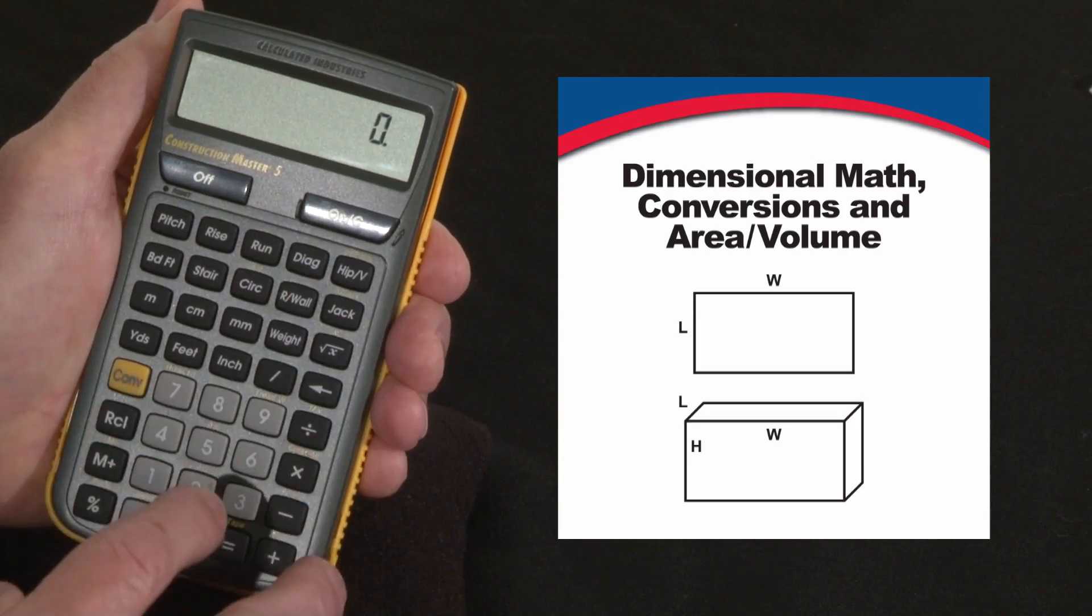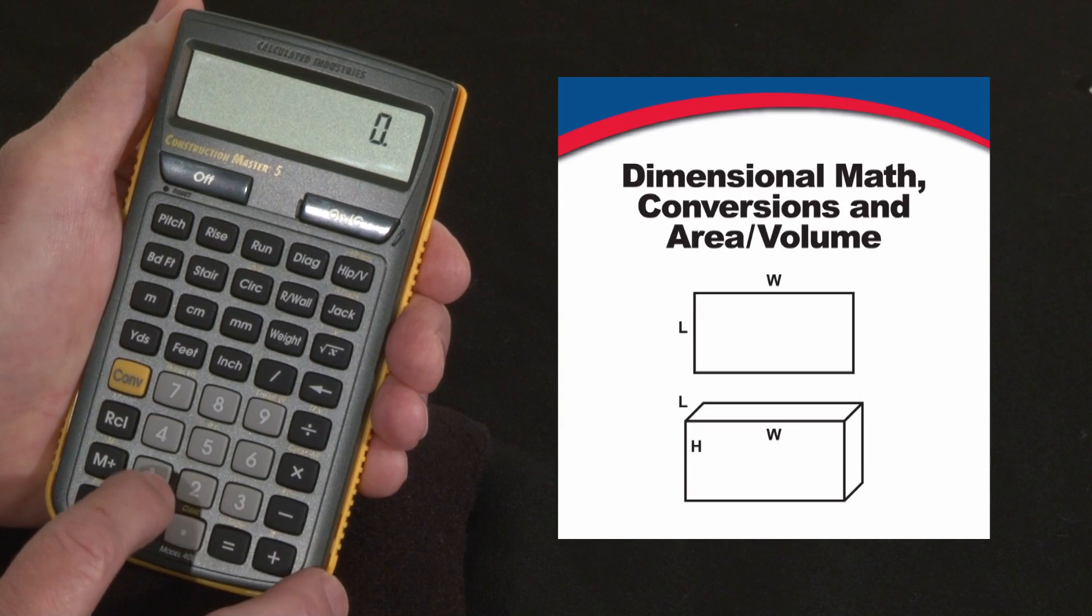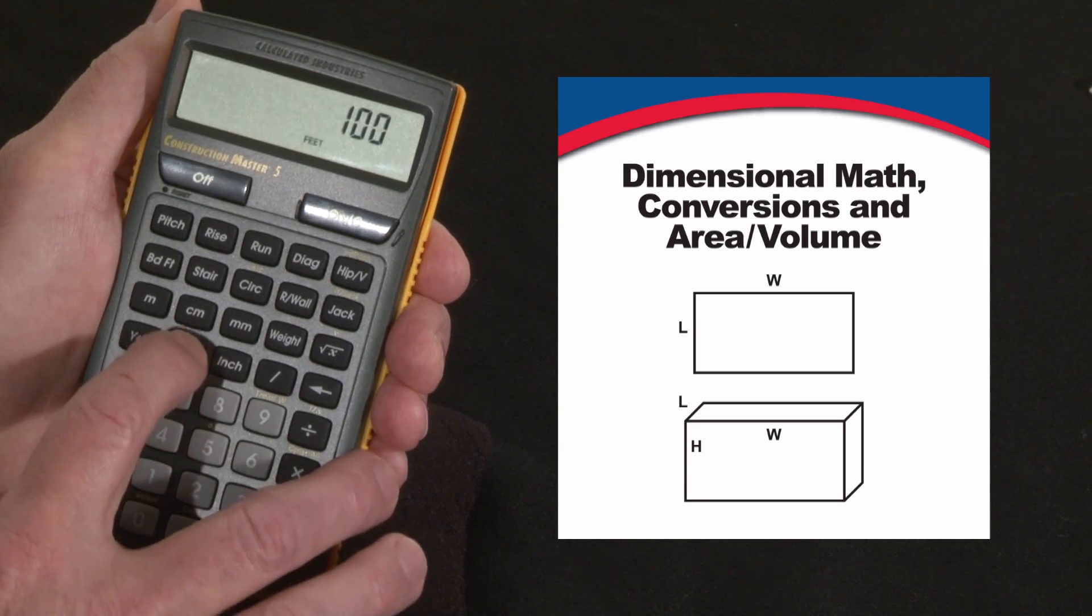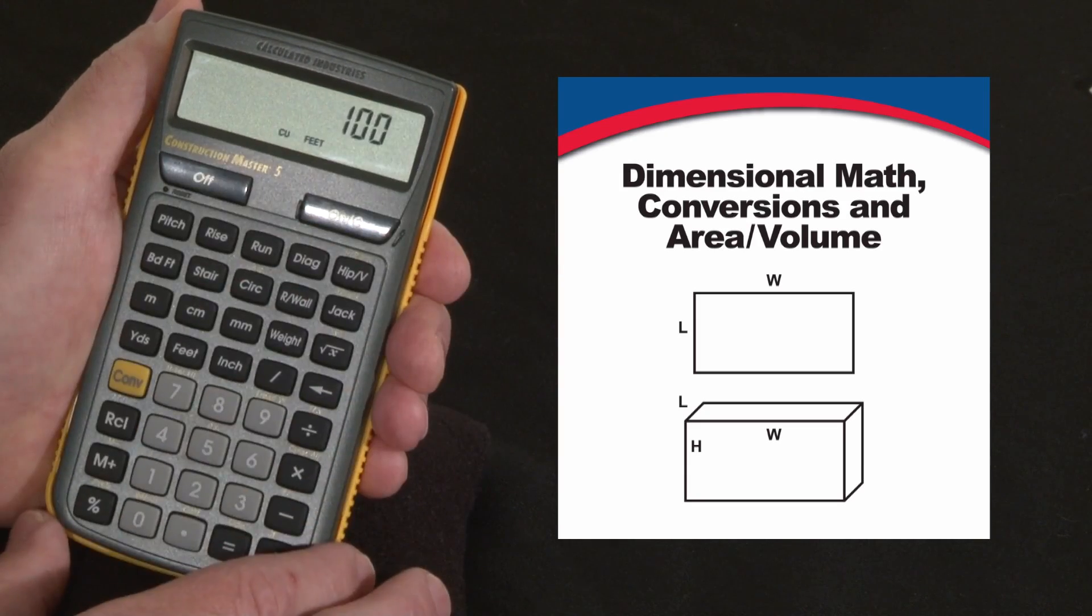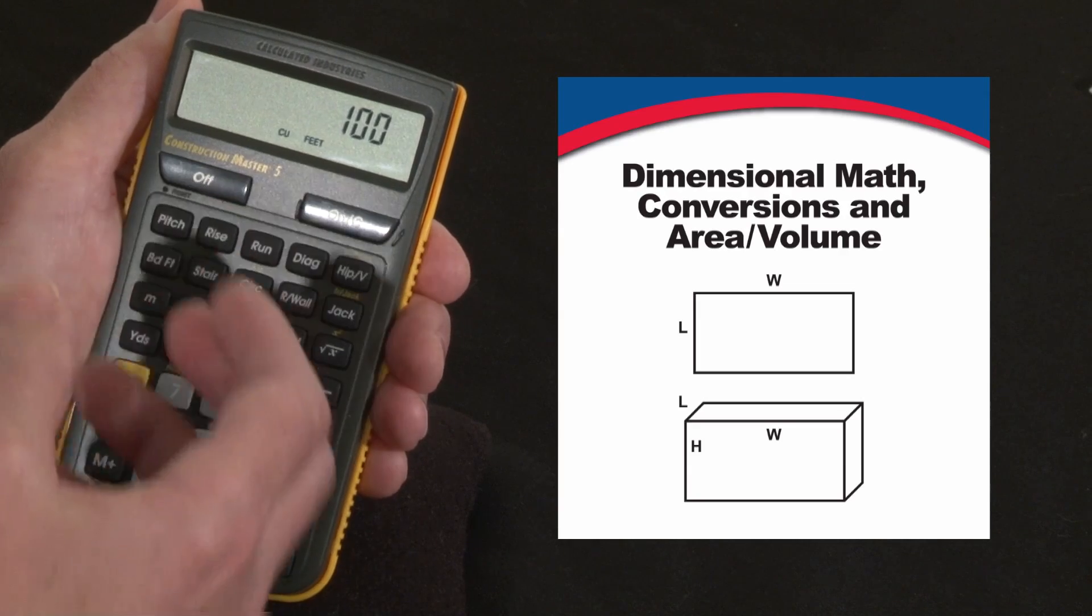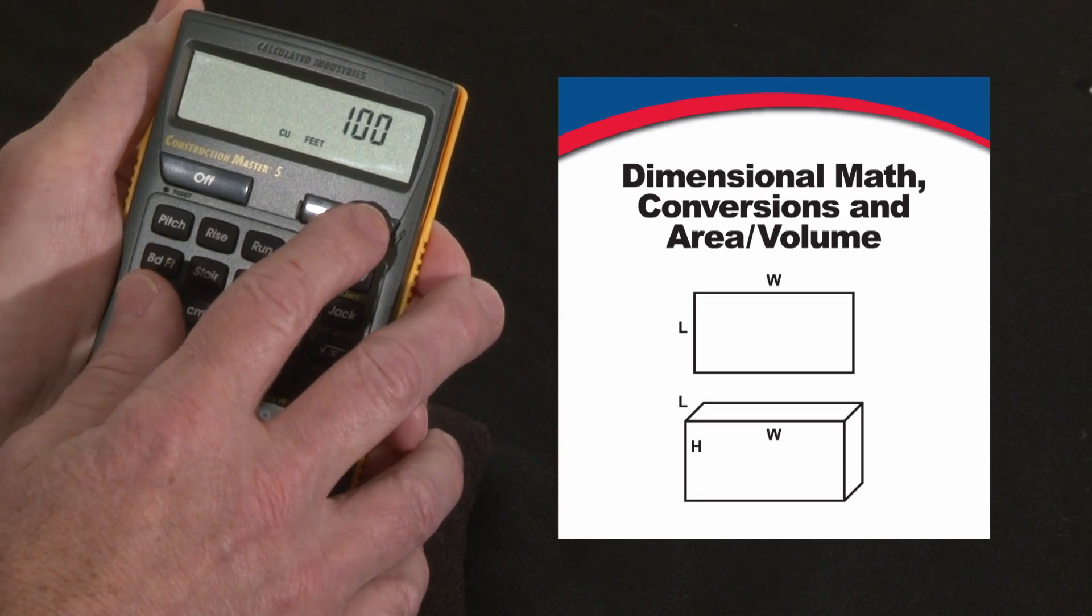You can also enter square and cubic values directly. For instance, if you knew you had a 10 by 10 room, you know that's 100 square feet. Just go 100 feet, feet—there's square feet. Press that one more time—there's cubic feet. So you can enter cubic yards, cubic inches, cubic feet, whatever, directly, just like that.